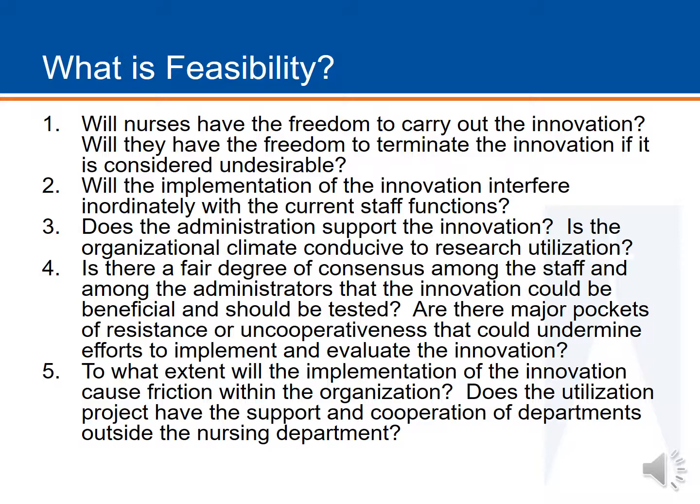The fourth question: is there consensus among staff and administrators that this could be beneficial? Are there major pockets of resistance or uncooperativeness that could undermine efforts? Basically, what are the barriers and supporting factors from the staff on the unit you're proposing? The fifth question looks at to what extent will the implementation cause friction within the organization, and is there support from departments outside of nursing? This closely relates to the fourth — what hurdles must be addressed for the project to be successful?